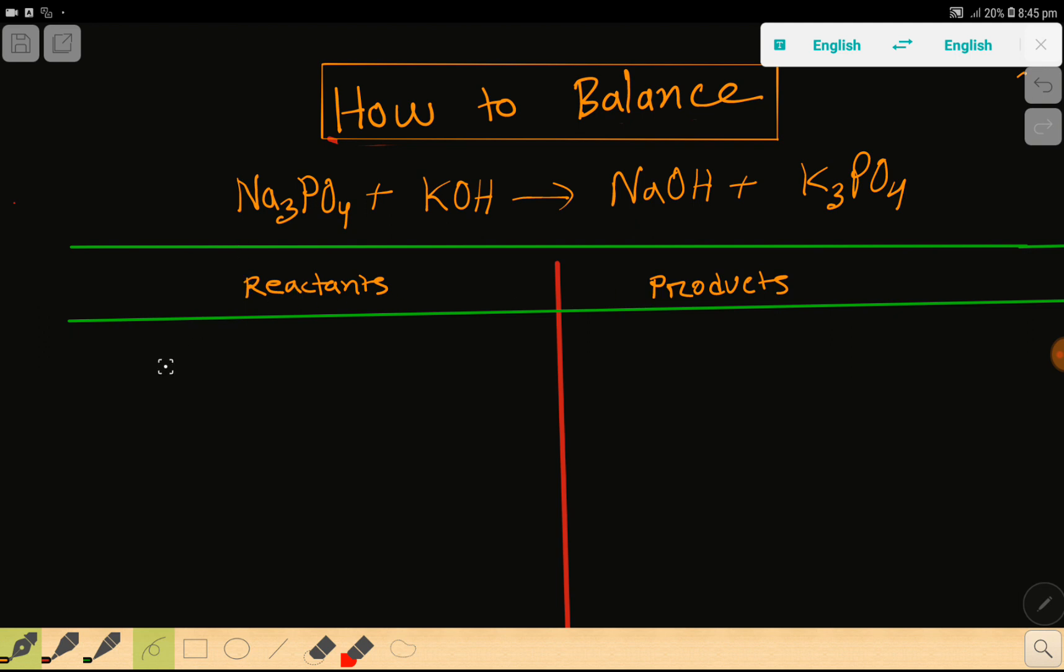In the reactant side we have here sodium which is 3. Then here we have phosphate PO4 which is 1. Then we have potassium which is 1. Then we have hydroxide which is 1.